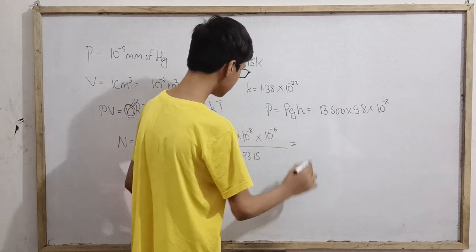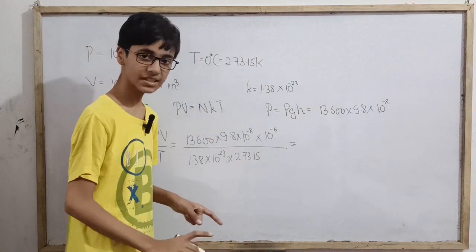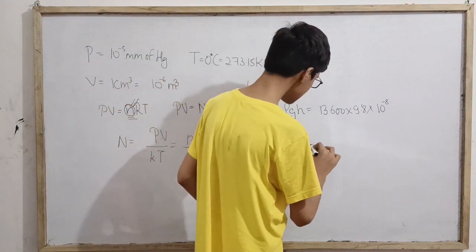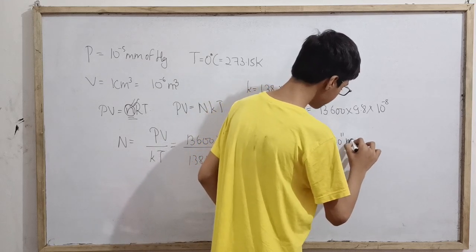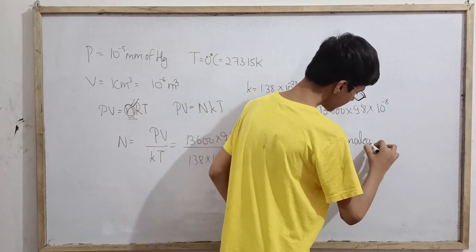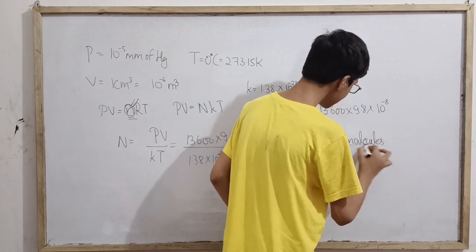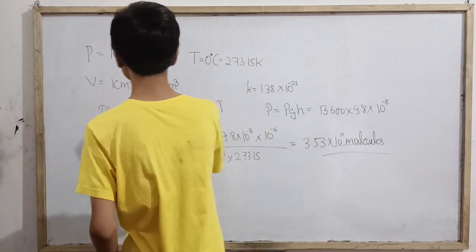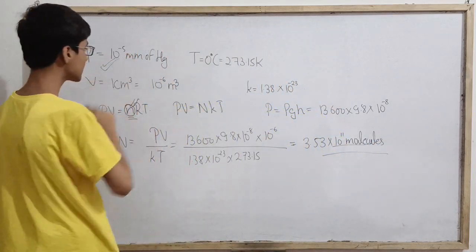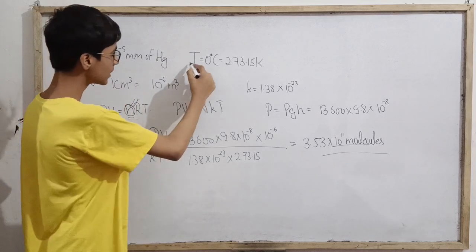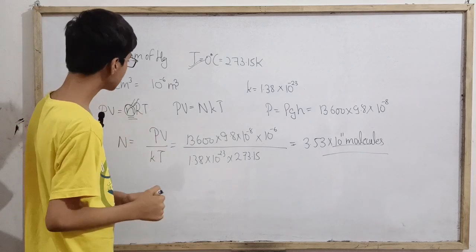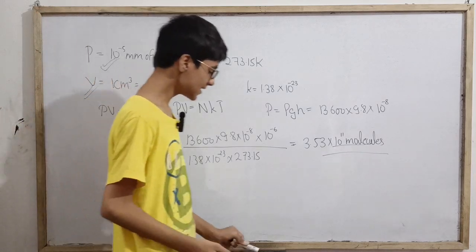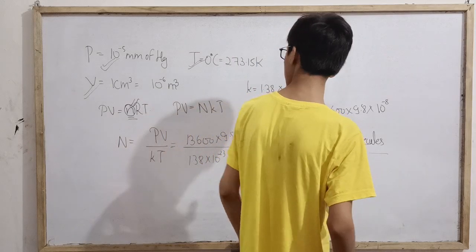Now everything is done, all we have to do is just solve this equation. And after that what we are actually getting is 3.53 into 10 to the power 11 molecules in so much amount of this ideal gas at 10 to the power minus 5 mm of mercury and 0 degree Celsius, which is 273.15 Kelvin, in a volume of 10 to the power minus 6 cubic meter, that is 1 cubic centimeter.